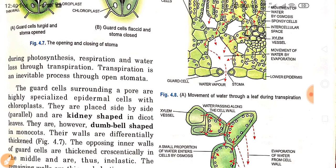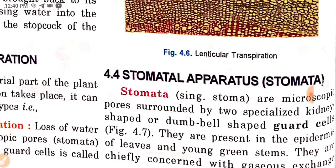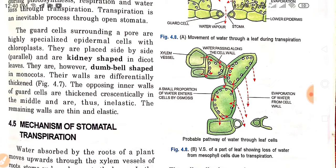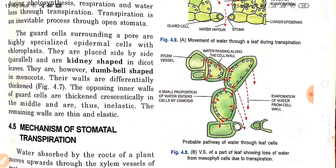Gaseous exchange mainly takes place during photosynthesis, respiration, and water loss through transpiration. Transpiration is an inevitable process through open stomata. The guard cells surrounding a pore are highly specialized epidermal cells with chloroplasts.